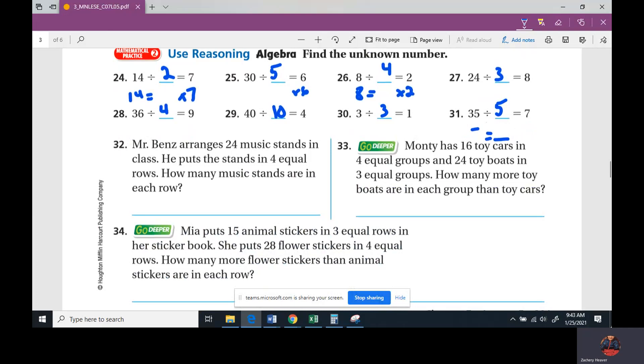Mr. Benz arranges twenty-four music stands in his class. He puts the stands in four equal rows. How many stands are in each row? What's our equation going to be? Twenty-four divided by four, which equals six music stands. Twenty-four divided by four equals six music stands.